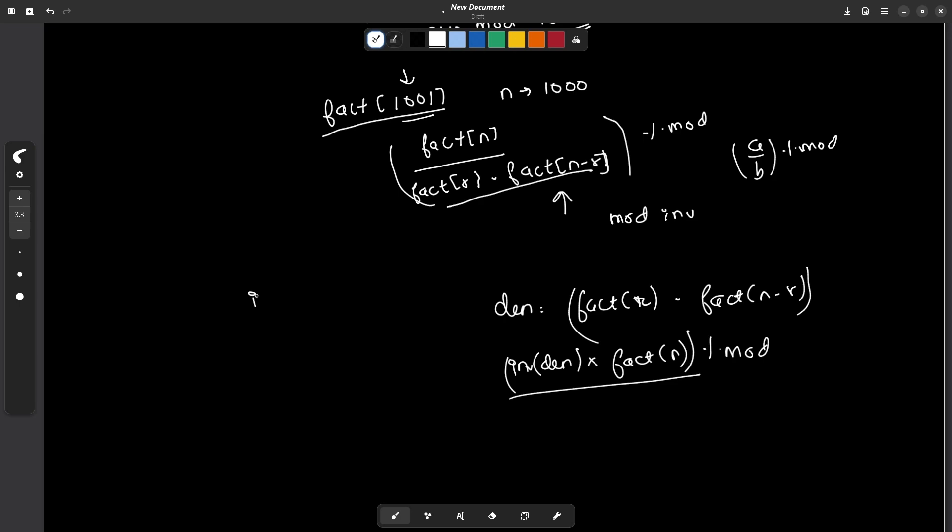Now the next question is how do I actually find the inverse value. This is my next task. In case the value of mod is prime, if the value of mod is prime, which is in most of the cases, that is equal to 1e9 plus 7 in this particular case.